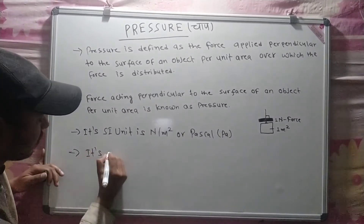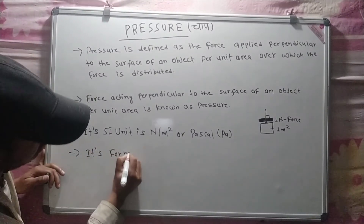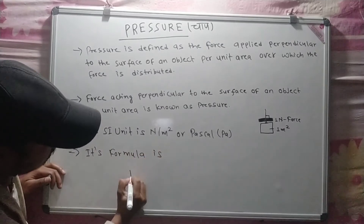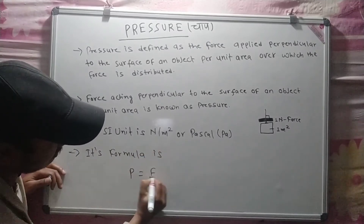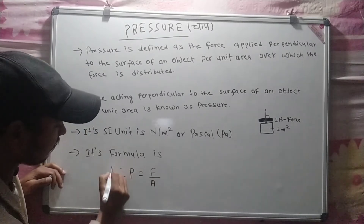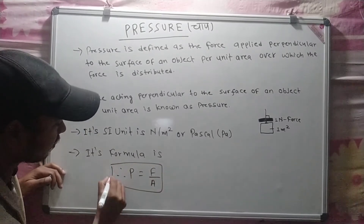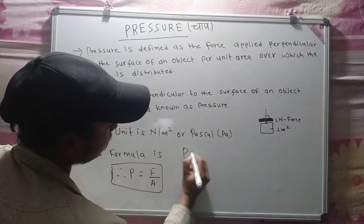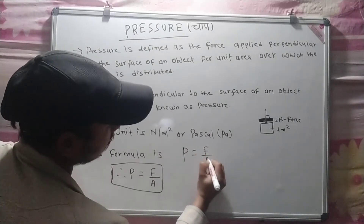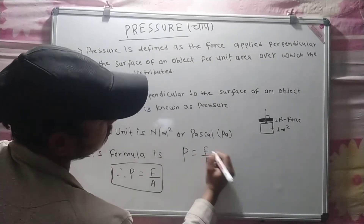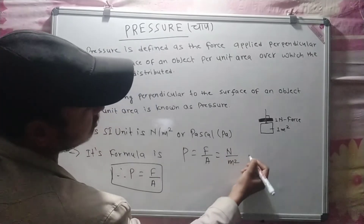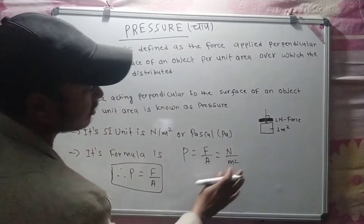The formula is P = F divided by A. The unit of force is Newton, and the unit of area is meter square. So the unit of pressure is Newton per meter square.